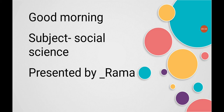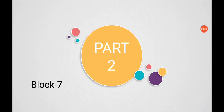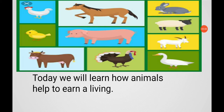Today, look at this. This is your Block 7 and this is Part 2 of your block. Now students, look at this picture. Tell me, which animals do you see in this picture, and where do we usually see them?